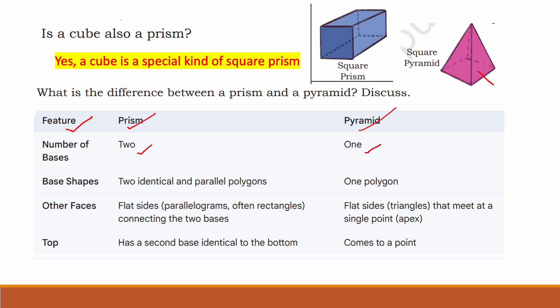Base shapes: for a prism, two identical and parallel polygons; for a pyramid, one polygon. In the case of a square prism the base is square; and in a square pyramid the base is also square. Other faces for a prism are flat sides — parallelograms, often rectangles, connecting the two bases. For a pyramid, the other faces are triangles that meet at a single point called the apex. The top of a prism has a second base identical to the bottom, while a pyramid comes to a point called the apex. These are the main differences between a prism and a pyramid.